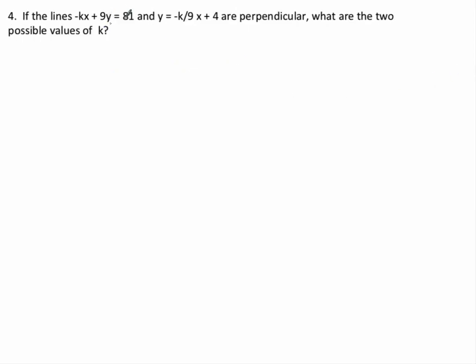Okay, and the next problem, we've got two lines that are perpendicular. What are the possible values of k? Okay, so we know the slope of this one is negative k over 9. The slope of this one, we have to do some rearranging. So we have 9y equals kx plus 81. y equals k over 9x plus 9. So there's the slope of this one. It's k over 9.